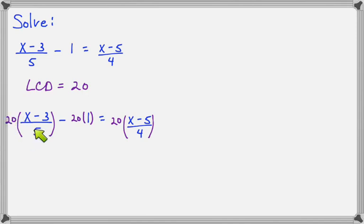20 over 5 makes 4. And here 20 times 1 makes 20. And for this last one, 20 divided by 4 makes 5.